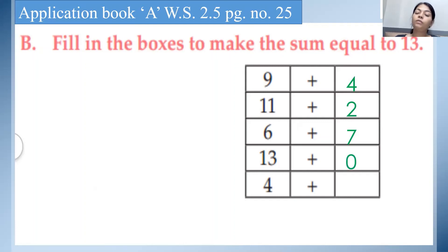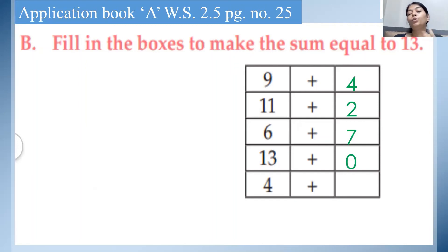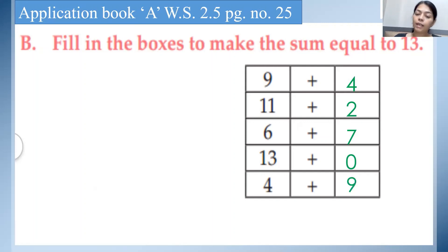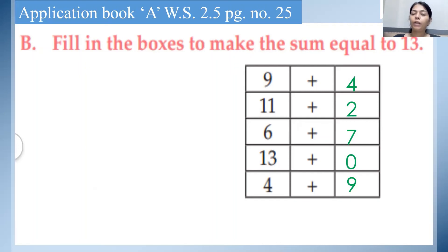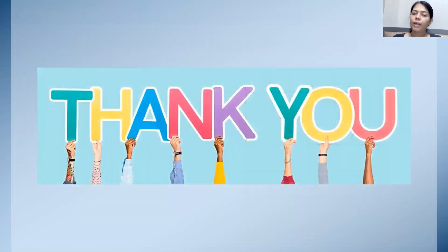See the next one: 4 plus what? How many more numbers do we need to add to 4 to make a sum equal to 13? Count after 4. Try to solve it by yourself. The answer is 9. So 4 plus 9 makes the sum equal to 13. This way we will complete worksheet 2.5. Thank you.